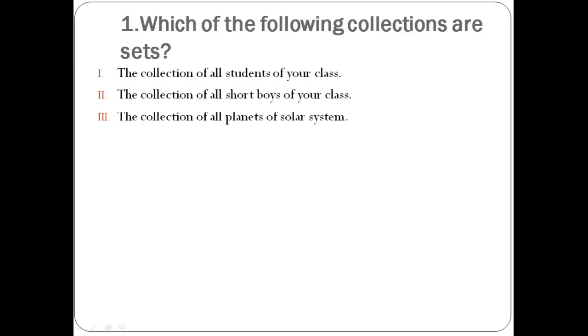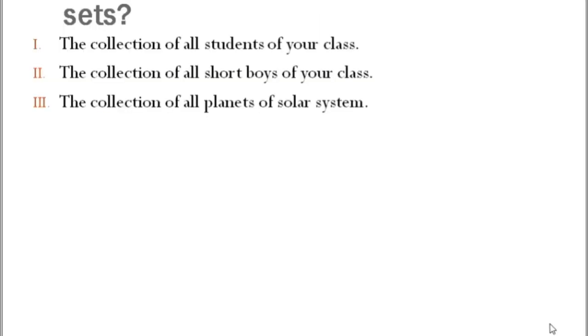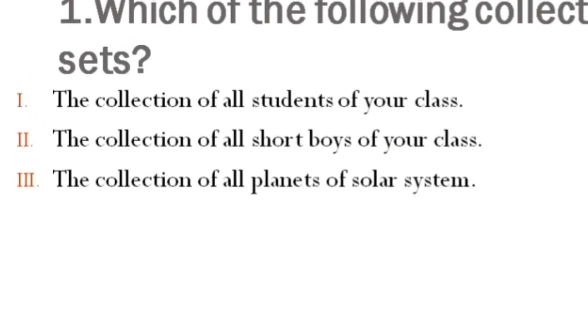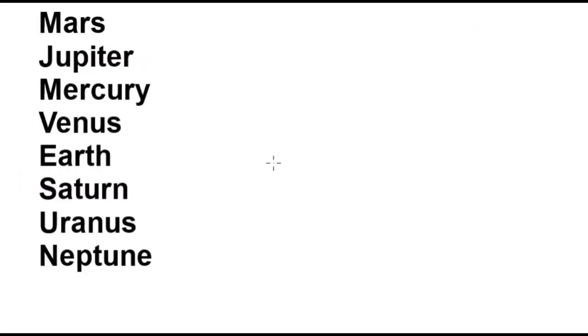Question number 3. The collection of all planets of the solar system. We all know that there are only 8 planets in the solar system, and nobody can change this number. So this is a fixed number for everyone. That's why we can write this in a set.